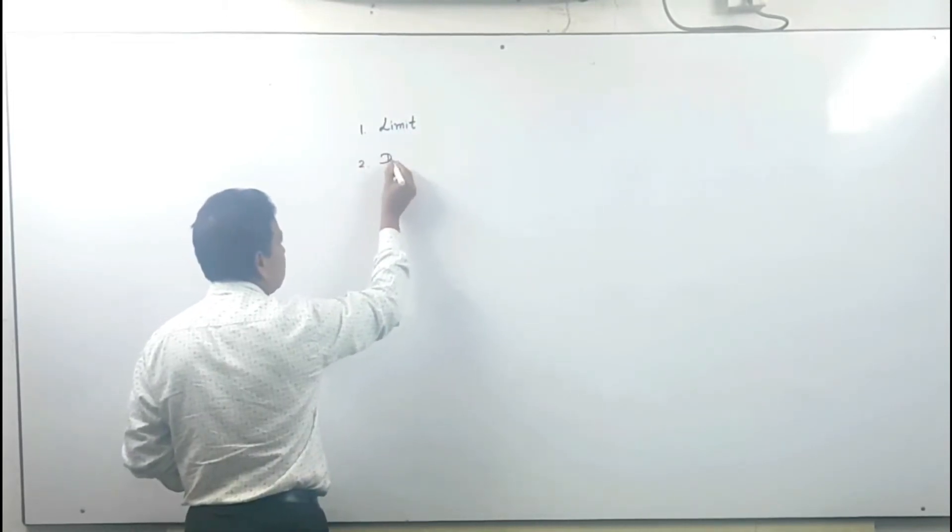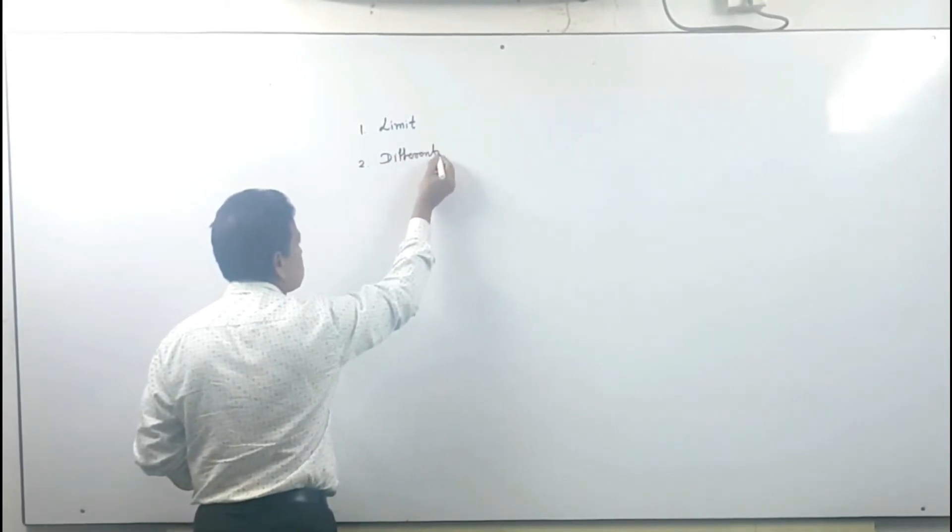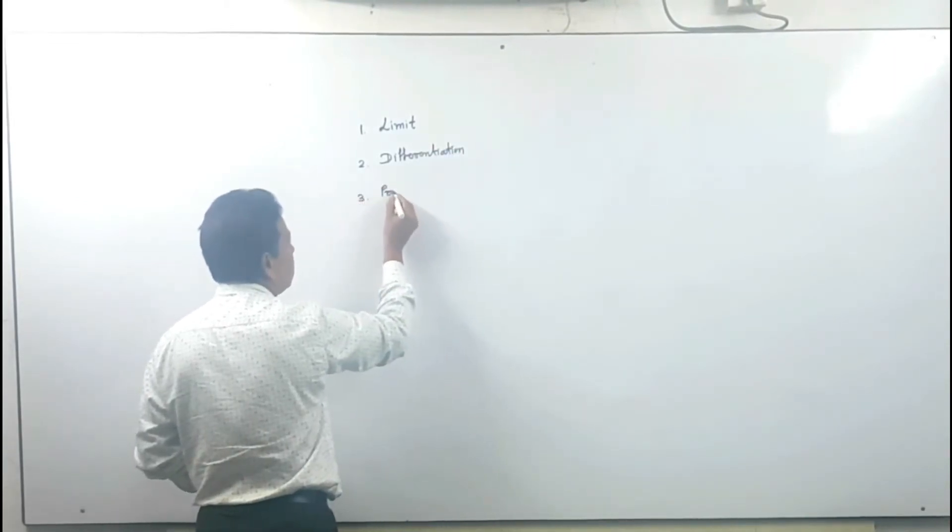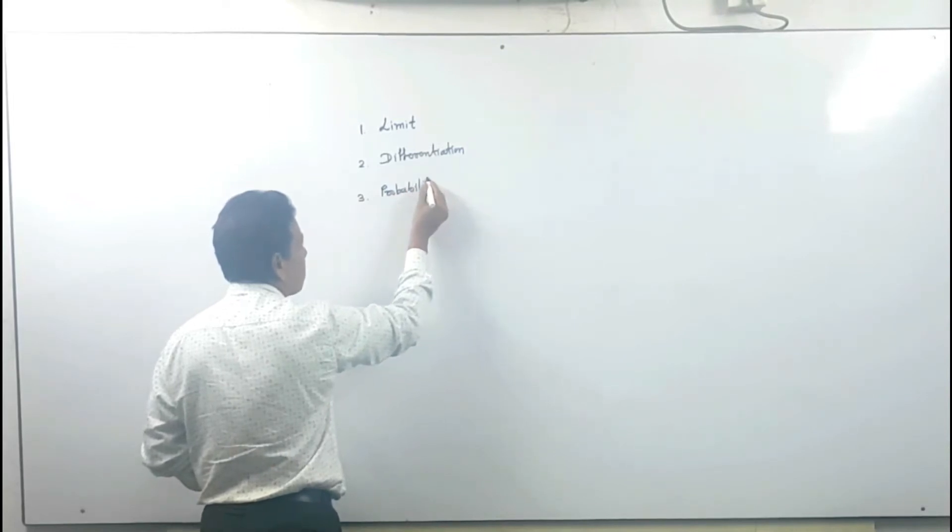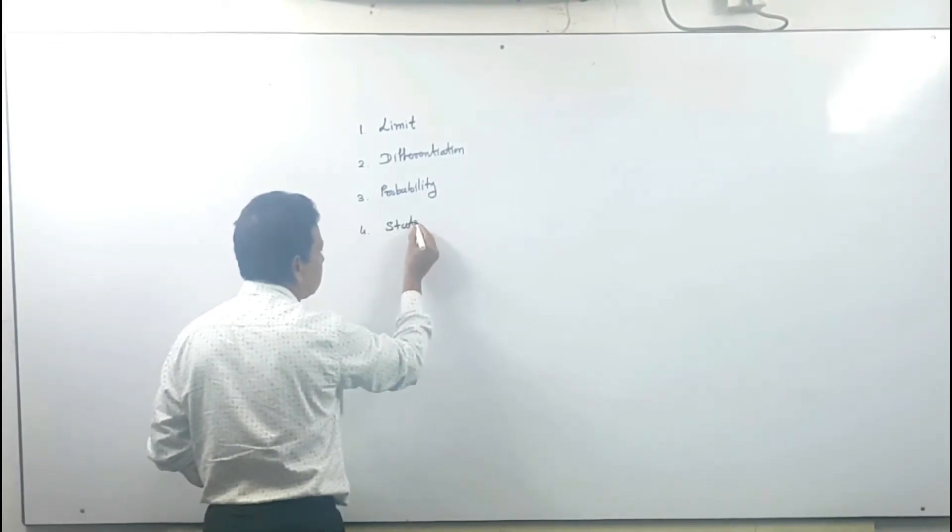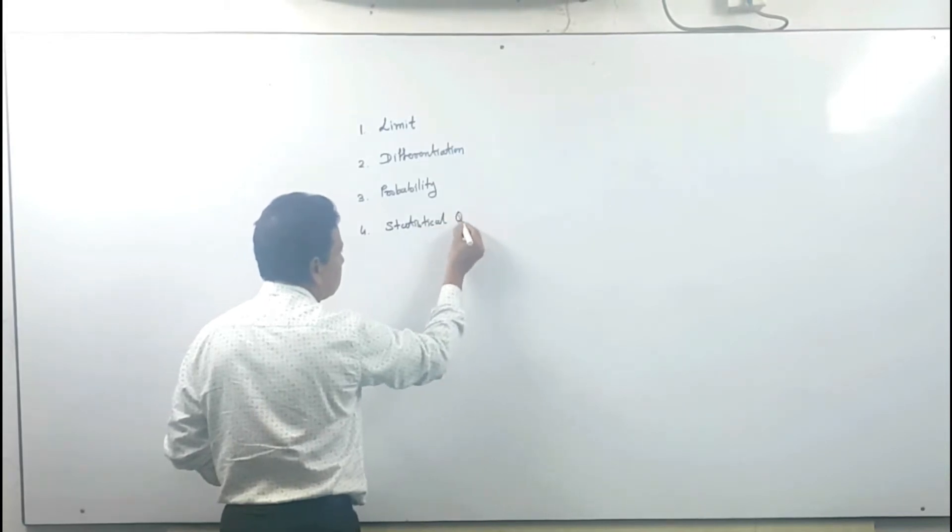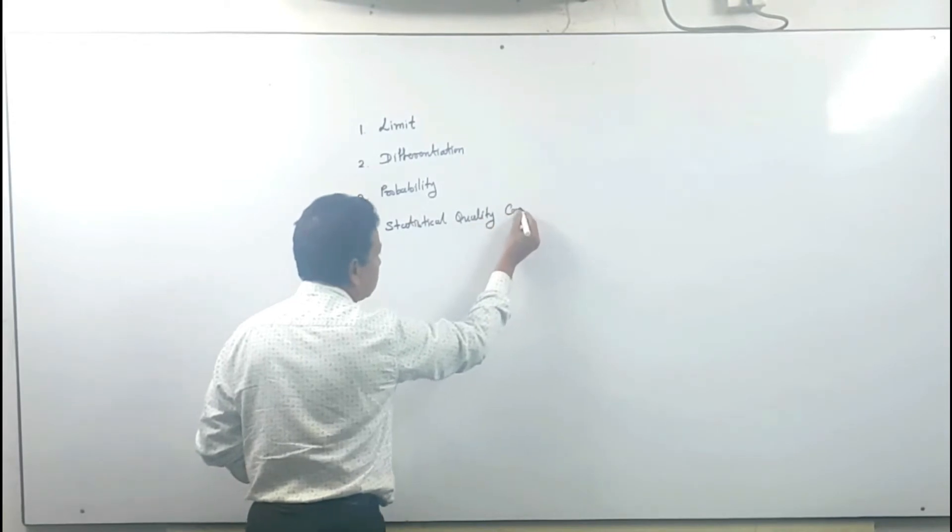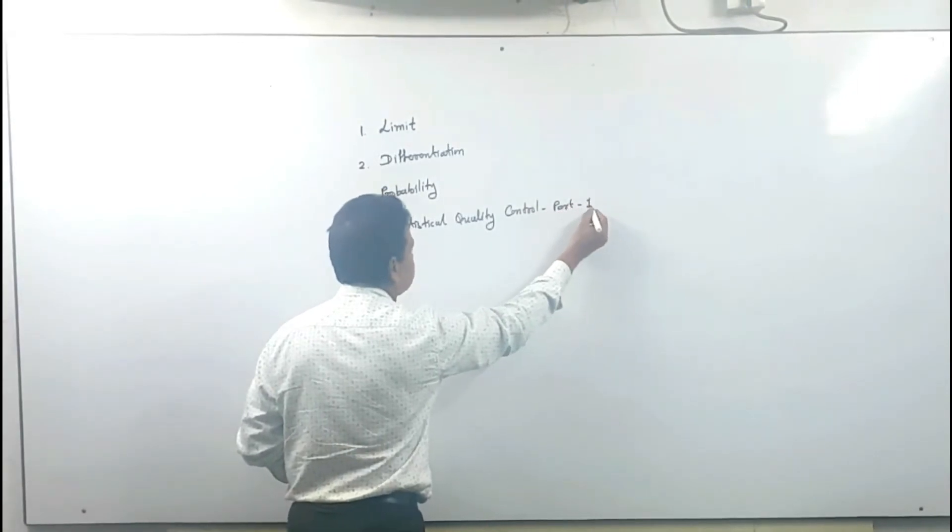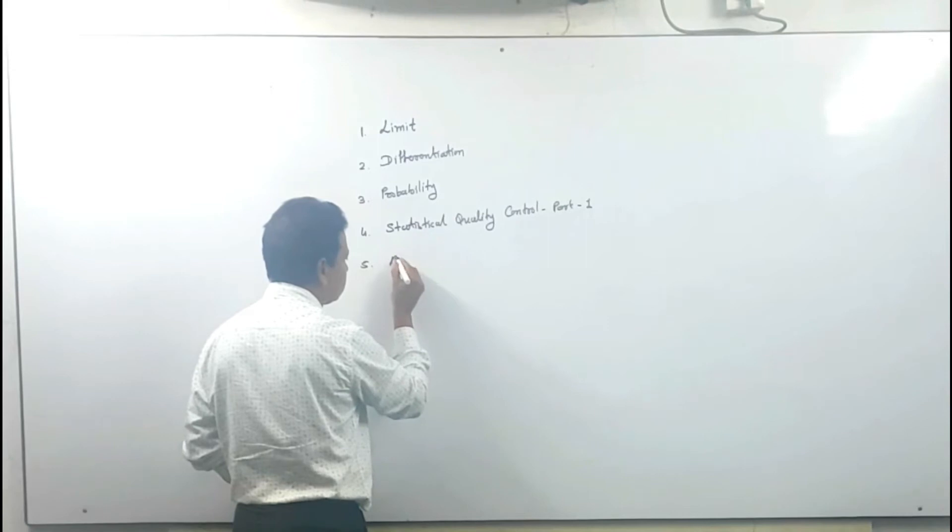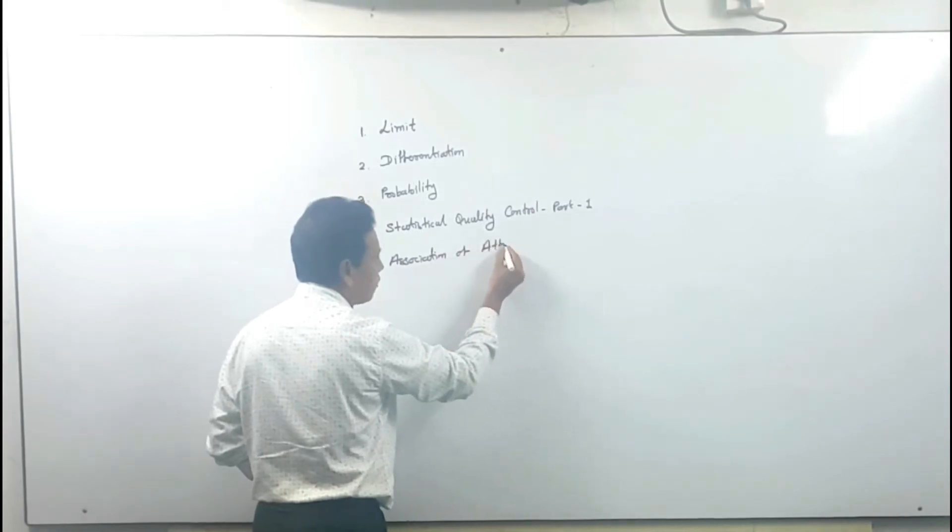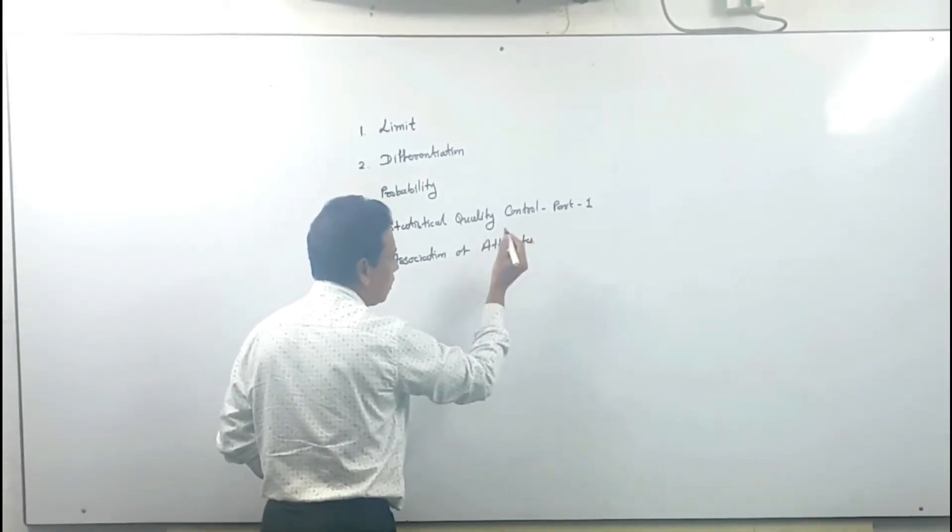Second is Differentiation. Third is Probability. Fourth one is Statistical Quality Control Part 1. Fifth one is Association of Attributes.